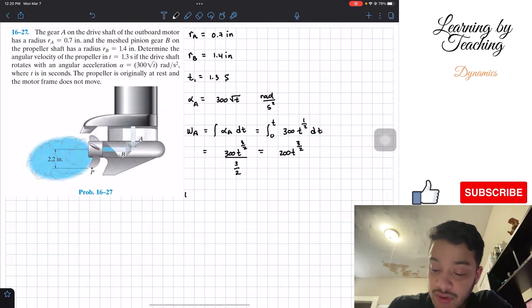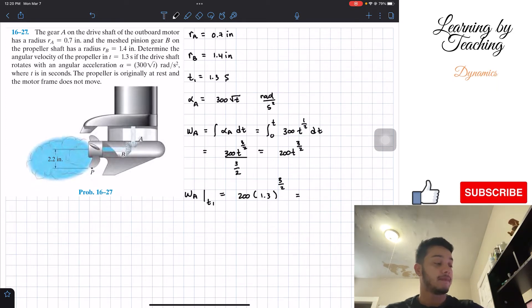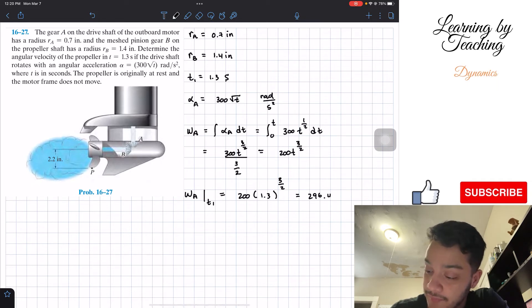Now that we have this, what we're going to do is evaluate this angular velocity at my time of interest, which is equal to 200 multiplied by 1.3 raised to the 3 halves. So I'm going to plug this into my calculator, and I'm going to get a total of 296.4. The units should be in radians per second for angular velocity.